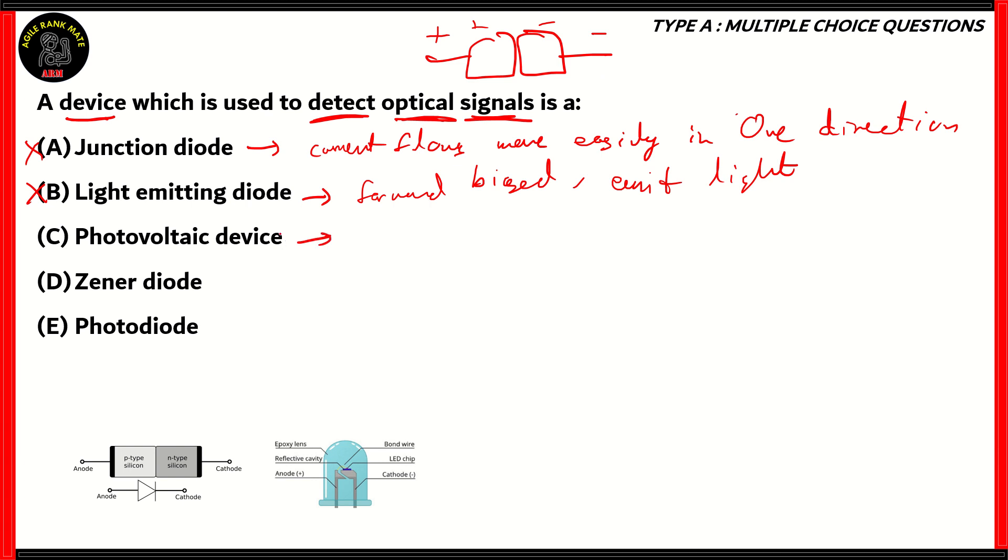What about option C, which is a photovoltaic device? A photovoltaic device. Now in a photovoltaic device, it converts light energy to electricity, and it does that by using the photoelectric effect. So in this particular scenario, light hits one of the junctions, like one of the semiconductors, it knocks out the electrons. And then when that happens, you can see that electricity is conducted. So we can convert light to energy electricity by using photovoltaic devices. So again, option C is incorrect.